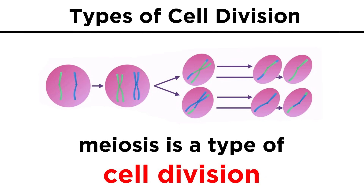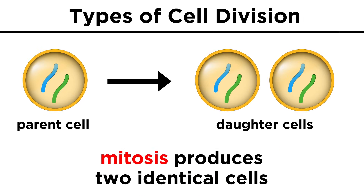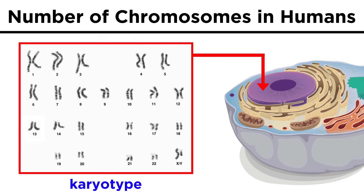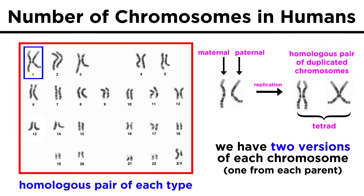First, let's understand that meiosis is another type of cell division, but it doesn't produce two identical cells like mitosis does. Human cells have forty-six chromosomes, which are two of each of twenty-three types, shown here in this karyotype, which is a display of all the chromosomes in an organism. Each pair of chromosomes of a particular type are called homologous, meaning they carry genes controlling the same characteristics.